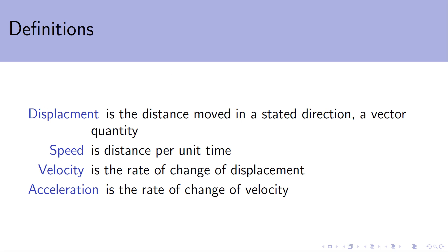We've got displacement, which is the distance moved in a stated direction — so it's a magnitude, a distance moved, and has a direction, making it a vector quantity. Speed is a distance per unit time. Note this is distance, not displacement. We'll have a closer look in a moment at the subtle difference between displacement and distance.